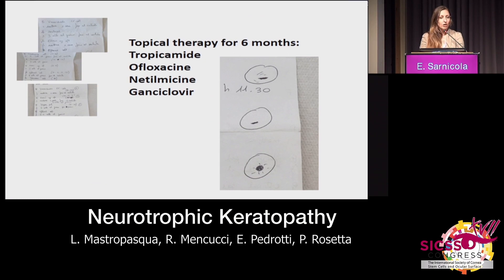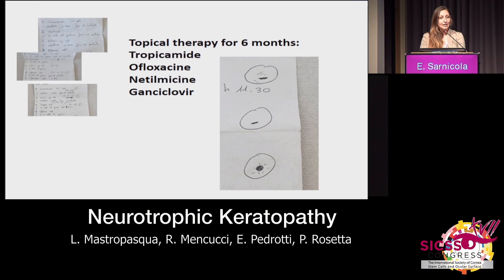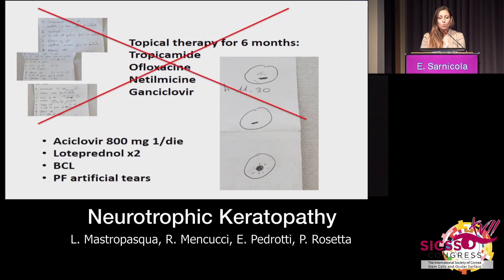This patient had been treated by a colleague who used tropicamide, two antibiotics, and a topical antiviral for six months, on the basis of the previous clinical history. However, the neurotrophic component was not addressed, and these drugs can only make the situation worse.